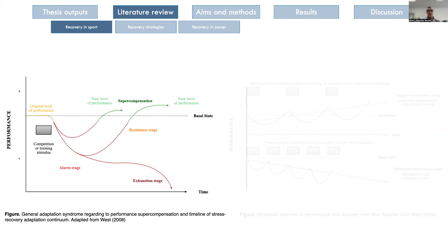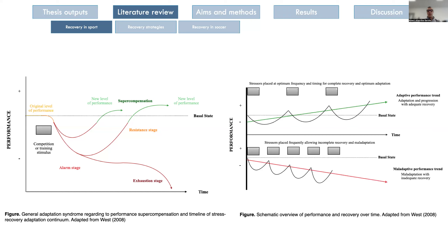Here you can see the general adaptation syndrome figure, first developed by Hans Selye but adapted from West. When you apply a stimulus, you enter an alarm stage. If done properly, you reach supercompensation or a new level of performance. If not done properly, you move toward an exhaustion stage or overtraining syndrome. The second key point is that recovery is related to previous loads, and depending on the individual capacities of each player, they will succeed or not.